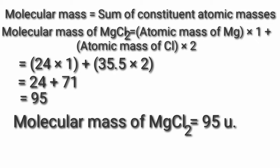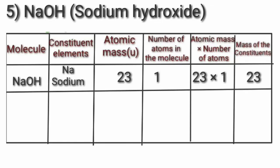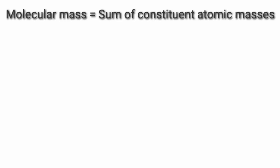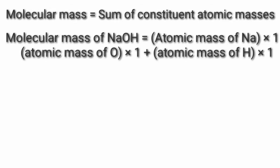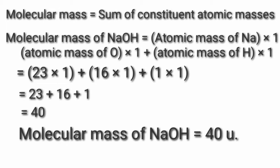Fifth, NaOH — sodium hydroxide. Constituent elements: sodium atomic mass 23, oxygen atomic mass 16, hydrogen atomic mass 1. Molecular mass of NaOH = (23×1) + (16×1) + (1×1) = 23 + 16 + 1 = 40. So molecular mass of NaOH is equal to 40 Dalton.